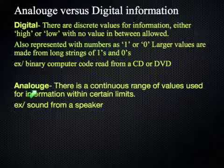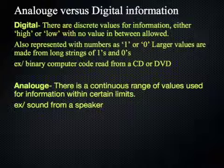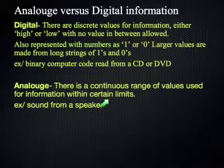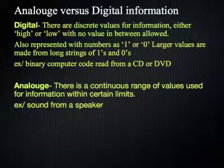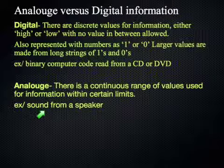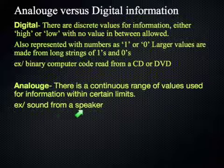Analog information, in contrast, is always a continuous range of values within certain limits. But pretty much any value in between a range is allowed. For example, sound has a large range of values from very quiet to very loud.